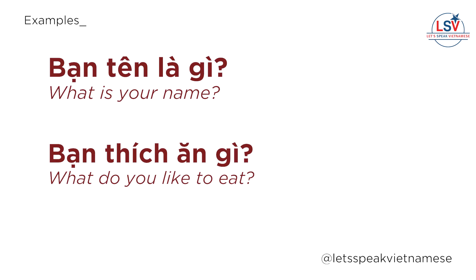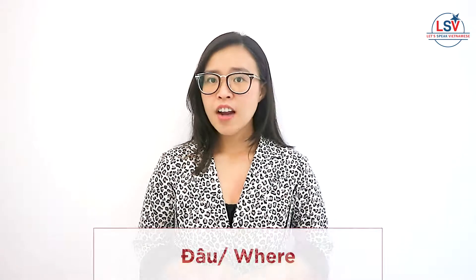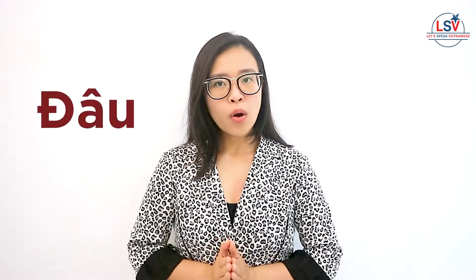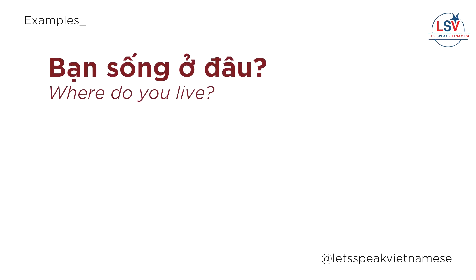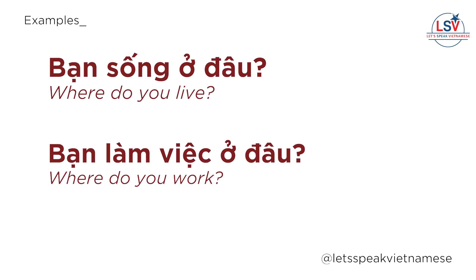Second, we have đâu, meaning 'where.' The vowel has a hat — remember not to make a flat 'A' sound, so it's not 'down,' it is đâu — keep it stable and high. For example: bạn sống ở đâu? and bạn làm việc ở đâu?